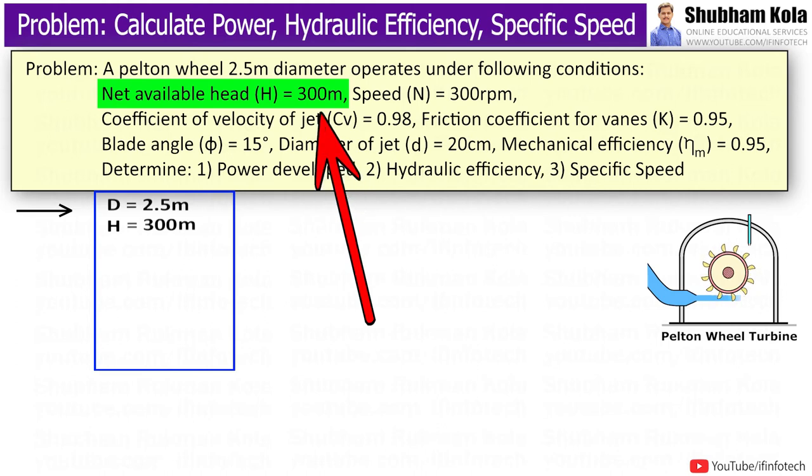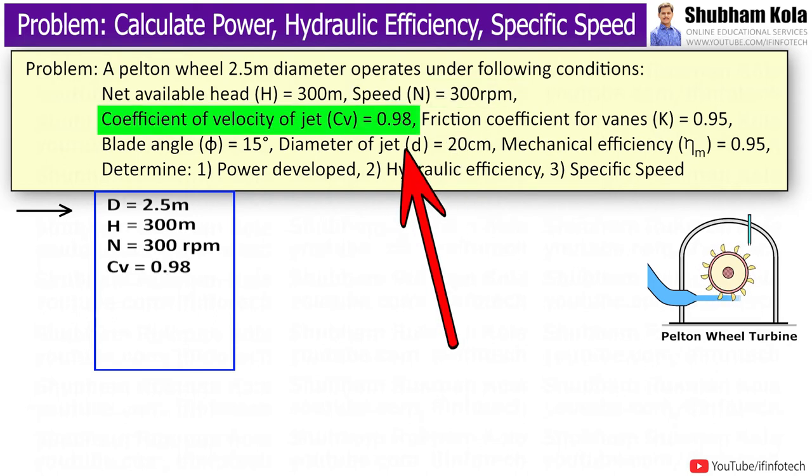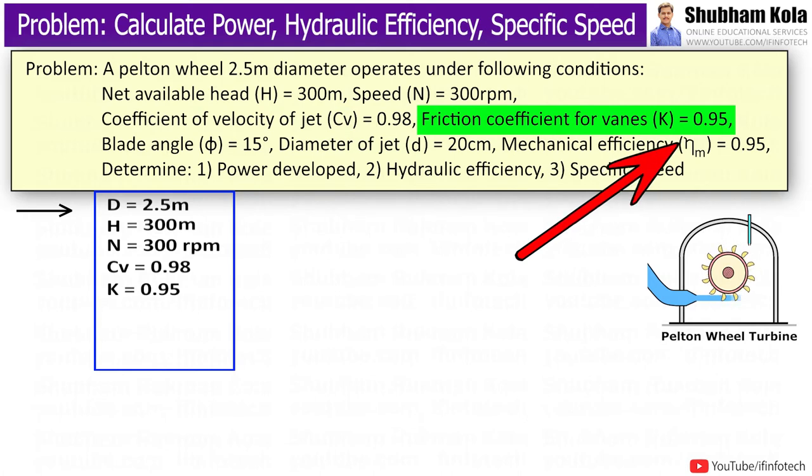Where net head H is equal to 300m, speed N is equal to 300rpm, coefficient of velocity of jet Cv equal to 0.98, friction coefficient for vanes K equal to 0.95.